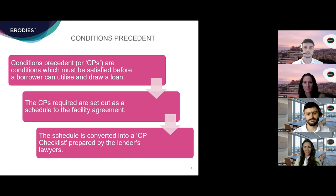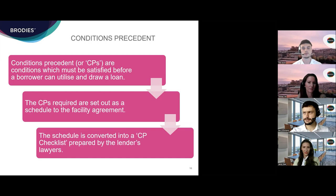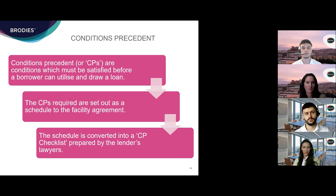Thanks, Ben. I'm going to talk through conditions precedent — what they are, why they're important, and what they generally cover in a development finance transaction. In the context of any facility agreement, conditions precedent, commonly known as CPs, are conditions which must be satisfied before a borrower can utilise and draw a loan. In most deals the CPs are set out as a schedule to the facility agreement and are transposed into the CP checklist — a live document used to monitor the progress of the deal, highlighting key areas that need to be progressed before completion can occur.